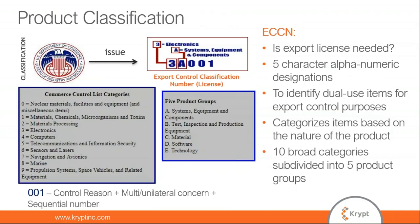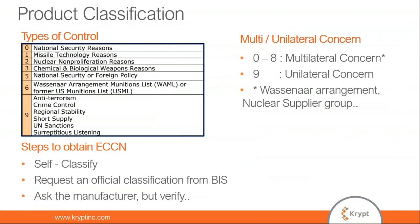Product classification is the first and most important task for export control. The ECCN consists of five alphanumeric characters that identify the technology level and capabilities of an item. There are ten broad categories subdivided into five product groups. For example, in 3A001: '3' is the broad category, 'A' is the product group, the third digit '0' is the control reason, '0' stands for multilateral or unilateral concern, and the last digit is the sequential number. Control reasons range from 0 (national security) to 8 (multilateral) and 9 (unilateral concern).